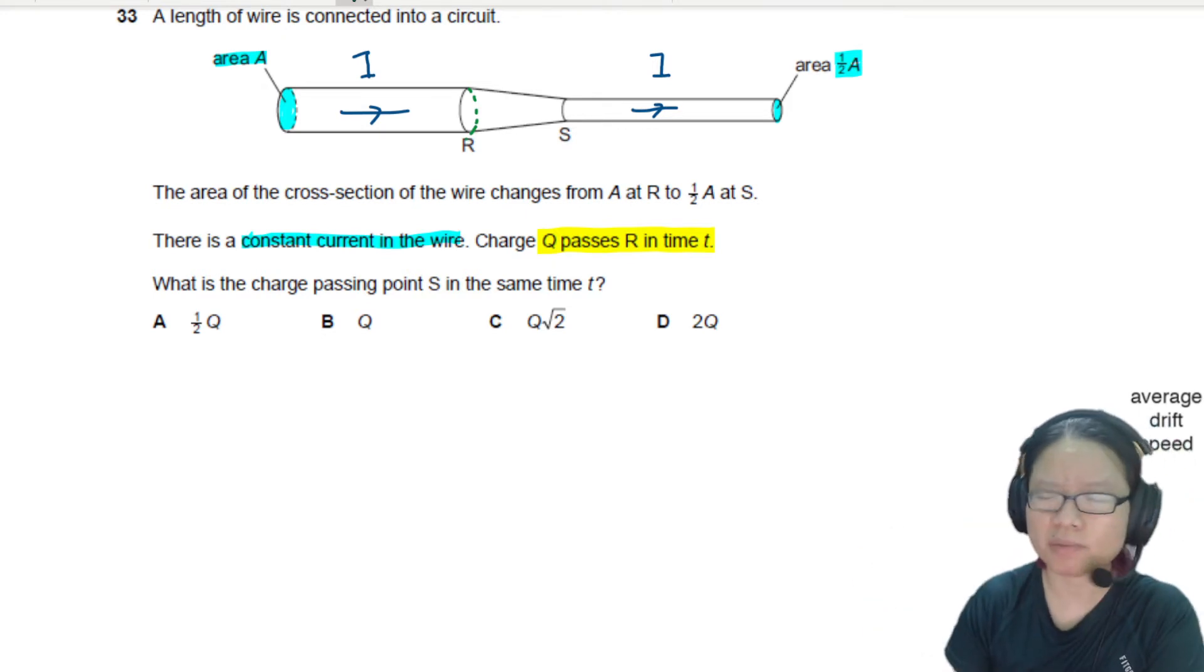Electrons will flow in the opposite direction but we're just counting, we're not really that concerned about the direction at this point. So charge passing through this point I have Q...